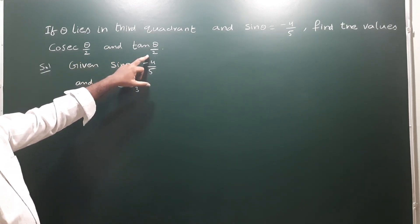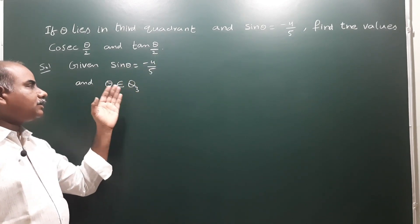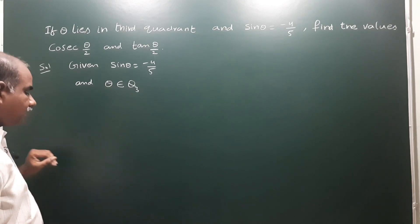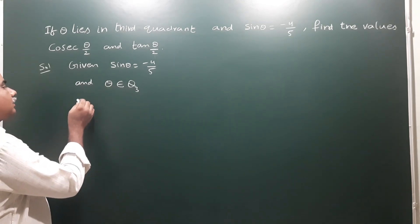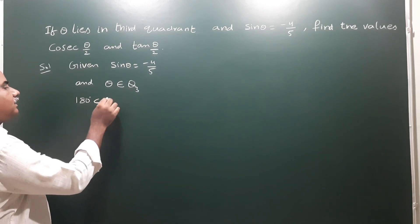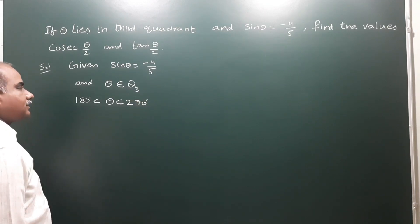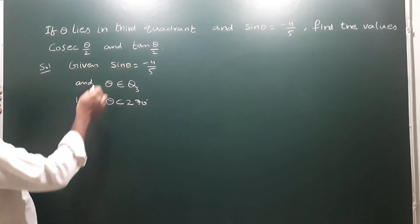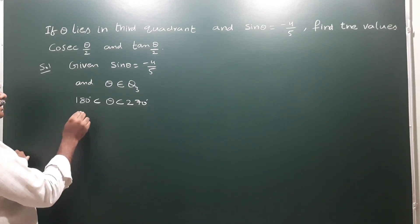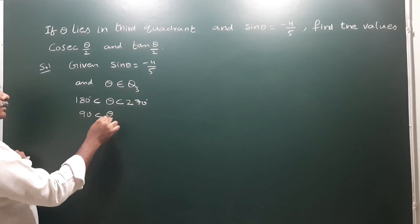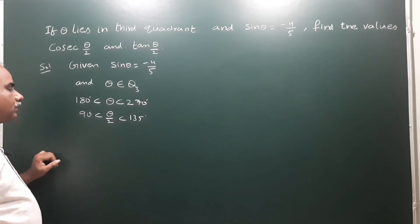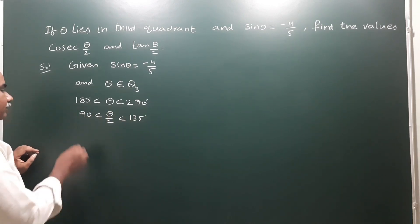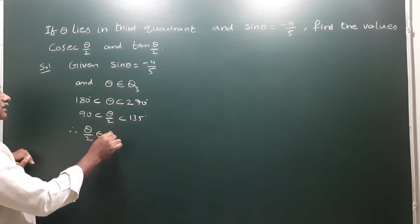Also, theta belongs to Q3, but here we have theta/2, so we need to find which quadrant theta/2 lies in. Since theta is in Q3, we write 180 degrees less than theta less than 270 degrees. Dividing the entire inequality by 2 gives 90 less than theta/2 less than 135. Therefore, theta/2 belongs to the second quadrant.